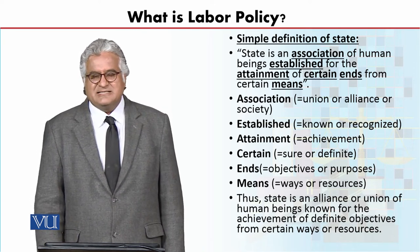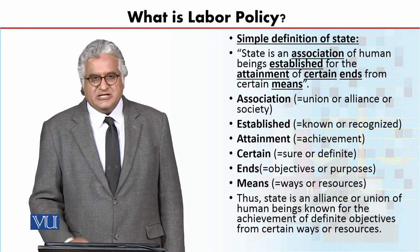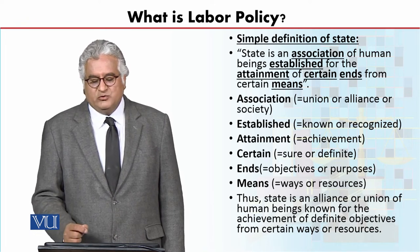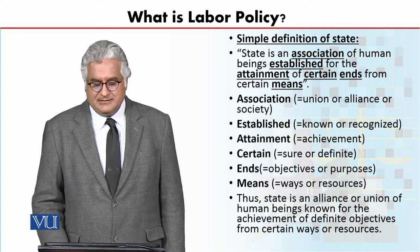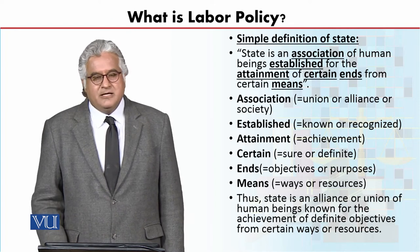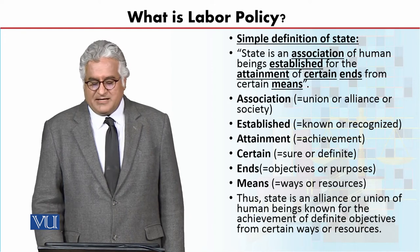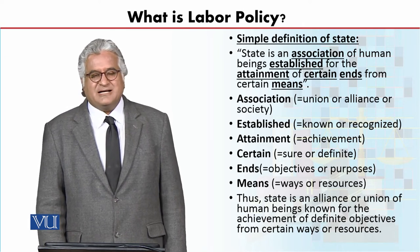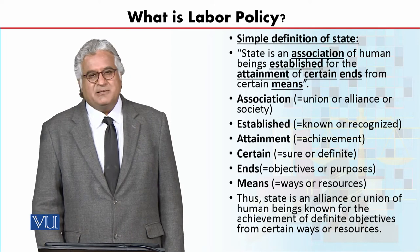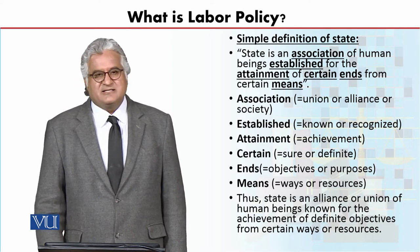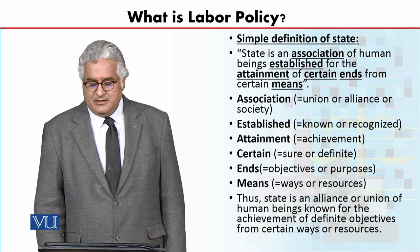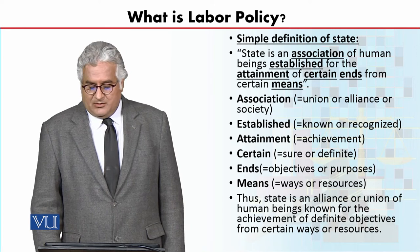Here you can see in the slides: association means union or alliance or society; established means known or recognized; attainment means achievement; certain means sure or definite; means means resources. Thus, my dear students, state is an alliance or union of human beings known for the achievement of definite objectives from certain ways or resources.